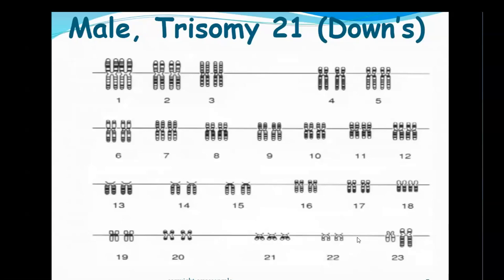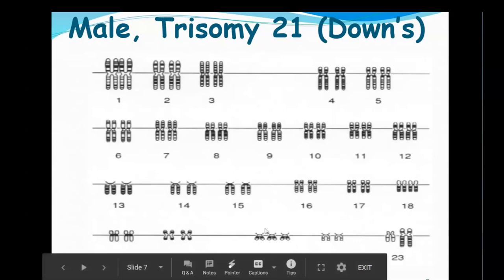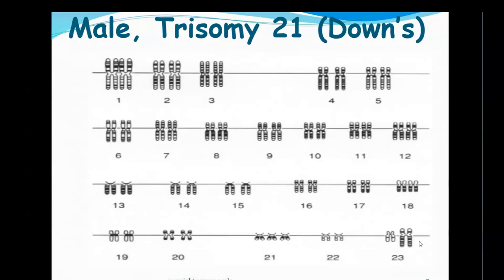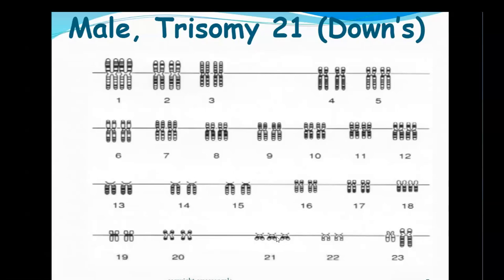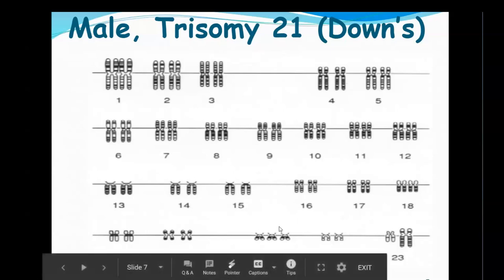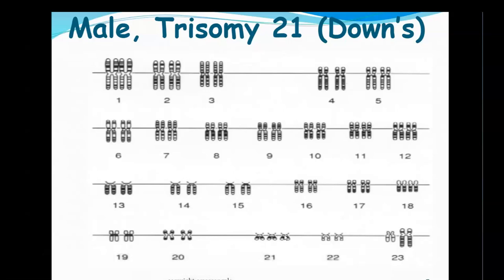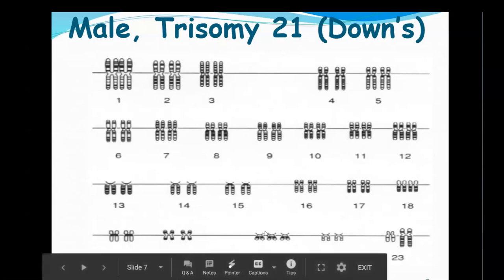Trisomy 21 — tri means three. So this means I have three of the 21st chromosome. Right here is the 21st chromosome, this short little one, and I have three of those but two of everything else. This would help me identify: one, it's a male because the 23rd pair doesn't match; and two, this male has trisomy or Down syndrome because they have three of the same chromosome. Understanding that each chromosome carries traits for specific genes and proteins, it's easy to understand why Down syndrome individuals have very similar features — they share the same extra 21st chromosome.